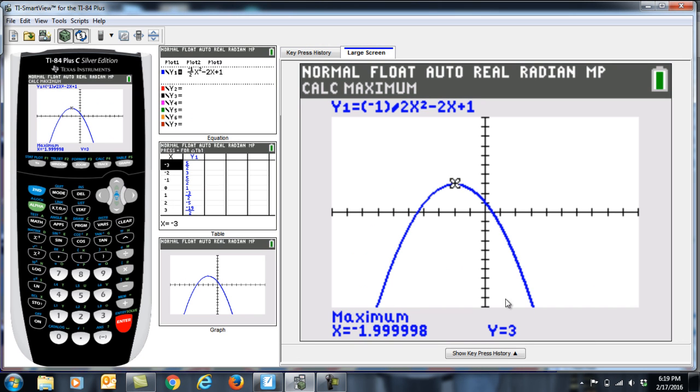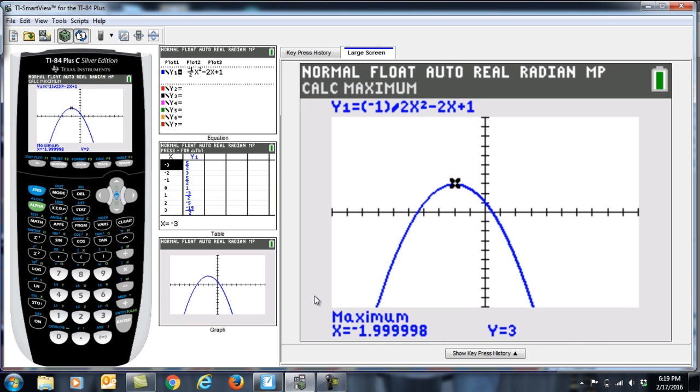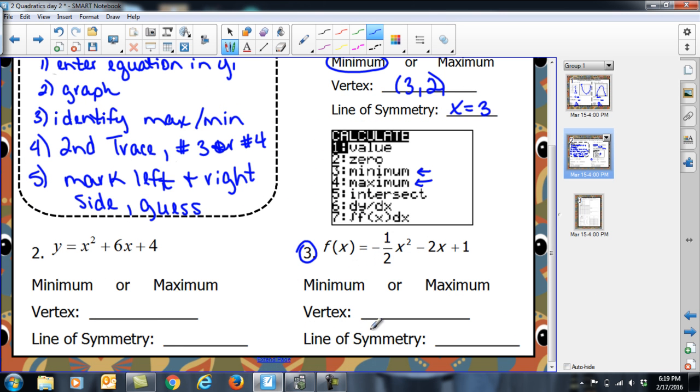Hopefully you noticed when you graphed this one that this time it was a maximum and not a minimum. You had to choose number 4 because we wanted a maximum this time. When you found your maximum, I've got these weird decimals, but it's at negative 2, 3. If I look at my table, negative 2, 3, and it's repeating on either side. My vertex is at negative 2, 3, which makes my line of symmetry at x equals negative 2.